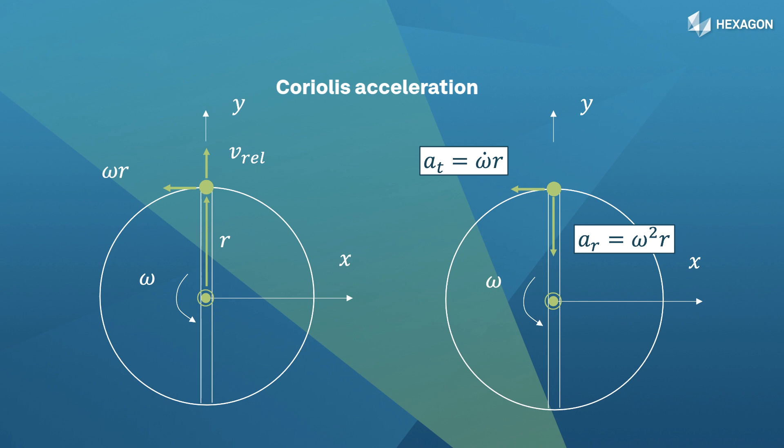Now let's look at acceleration. The tangential acceleration is given by the rate of change of rotational speed multiplied by the distance from the center. Also, there is a radial inward acceleration. This acceleration points toward the center of the disc. The radial acceleration is given by the square of the rotational speed multiplied by the distance from center. This is also known as centripetal acceleration.